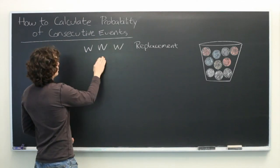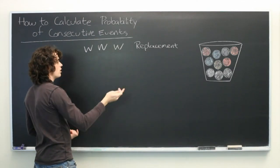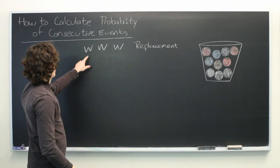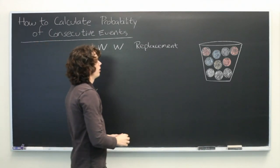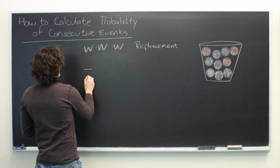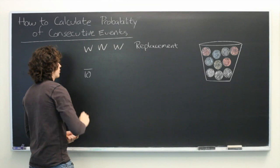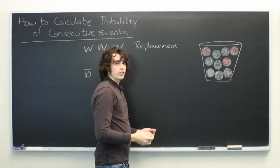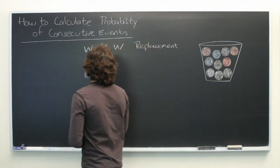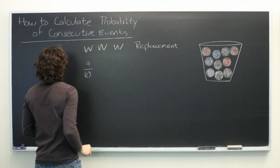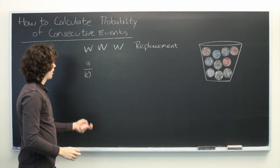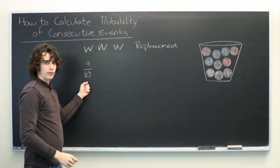What we want to do is calculate the probability of each event and then multiply them together. We'll start with the first white ball. We have ten balls total, so that'll be the denominator of our fraction, and there are four possible events that we would want, since there are four white balls. But since we're replacing the balls each time, this probability will be true for all of these events.